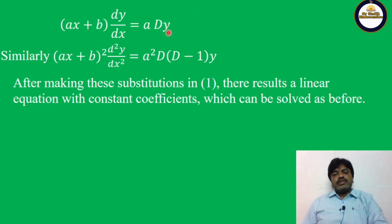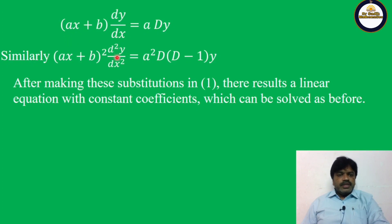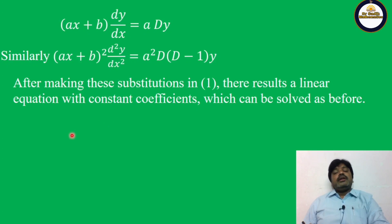Remember these two results: (Ax+b) dy/dx = A·Dy, and (Ax+b)² d²y/dx² = A²·D(D−1)y. In Cauchy's homogeneous linear equation there was only Dy, but here we get the extra factor A, the coefficient of x. If it is squared, we get A²·D(D−1)y. Substituting these values reduces the equation to one with constant coefficients, solvable by known methods.